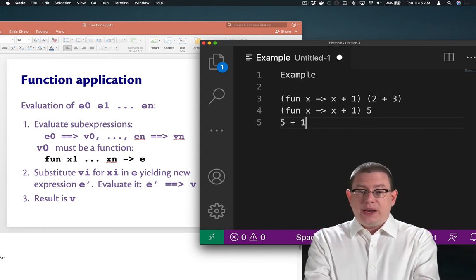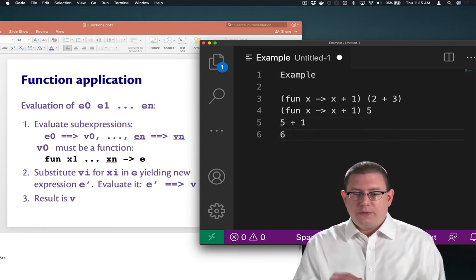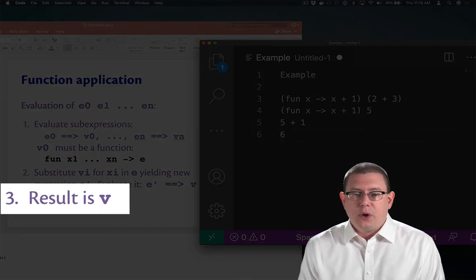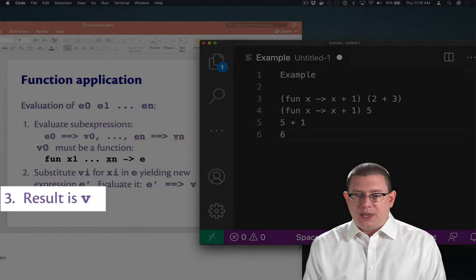Finally, evaluate e prime to a value. 5 plus 1 evaluates to the value 6. And that is the result of the entire function application expression.